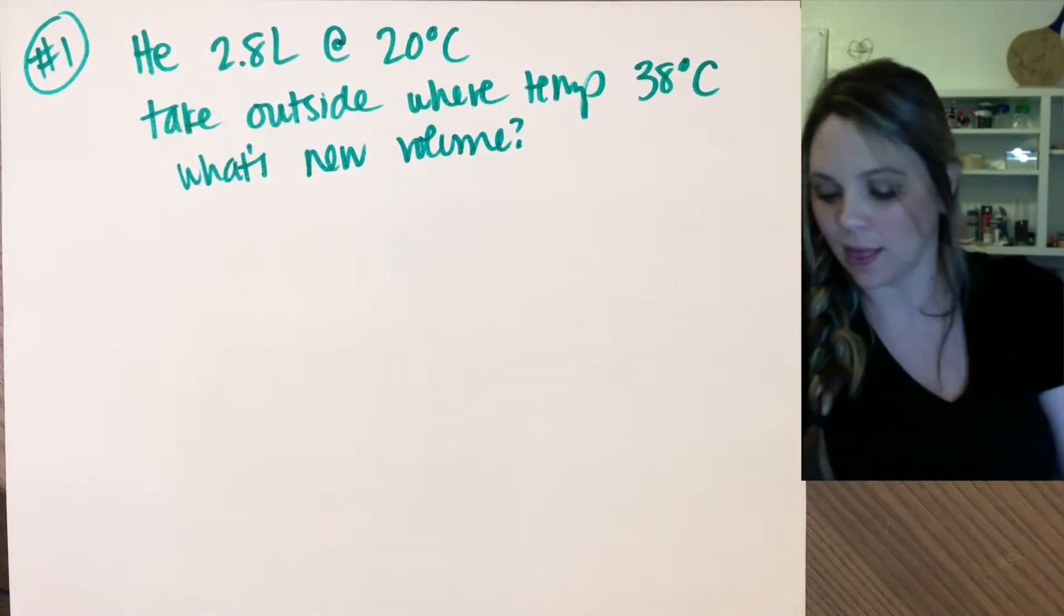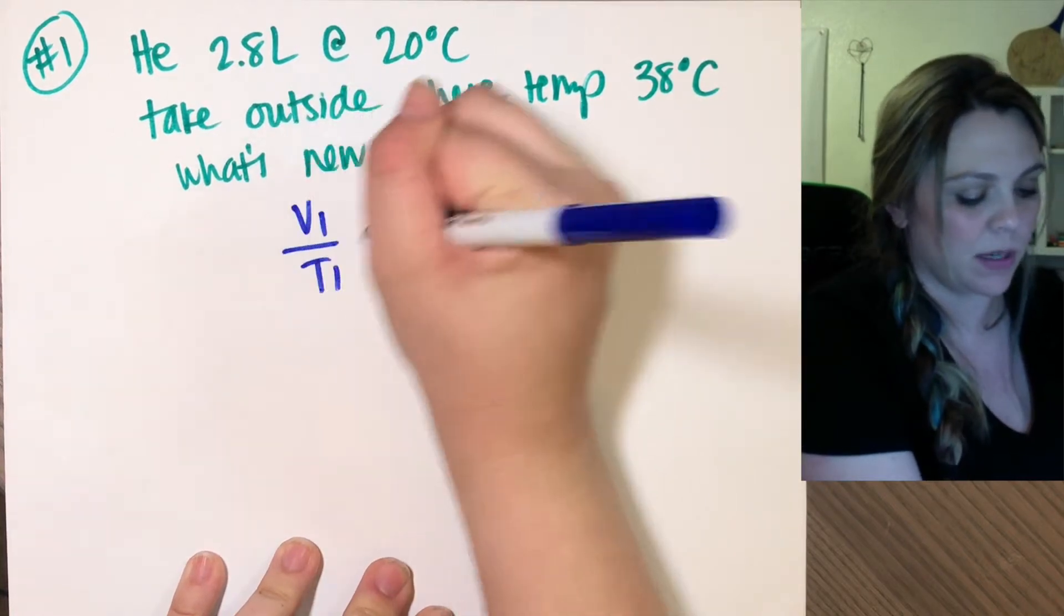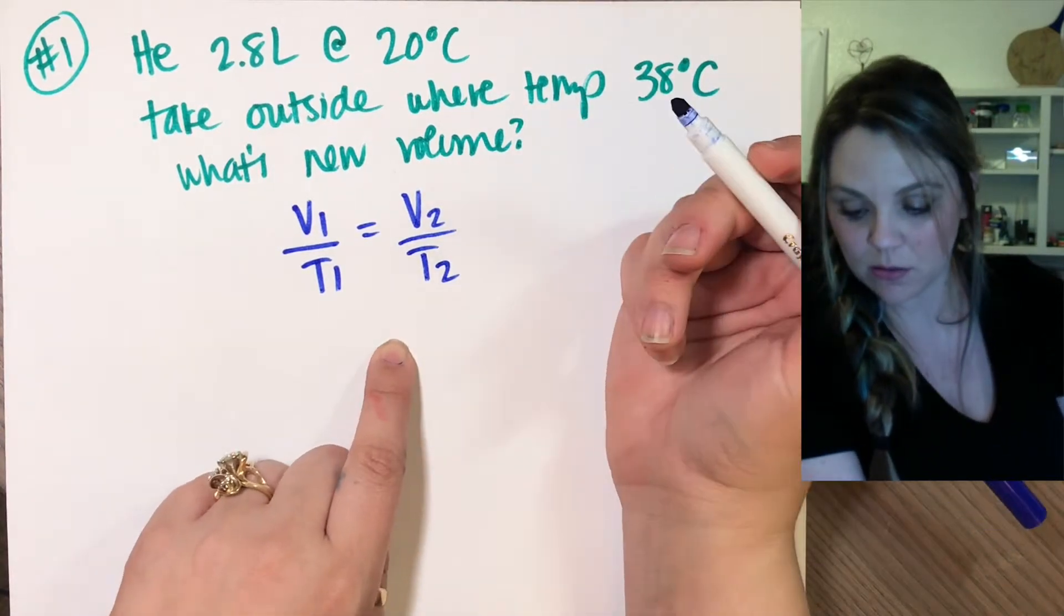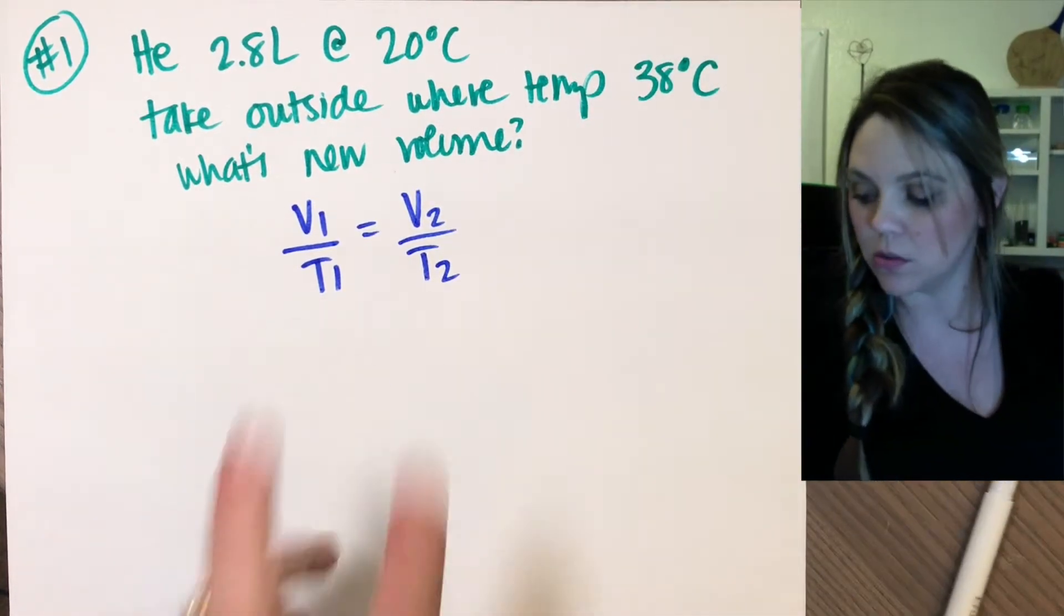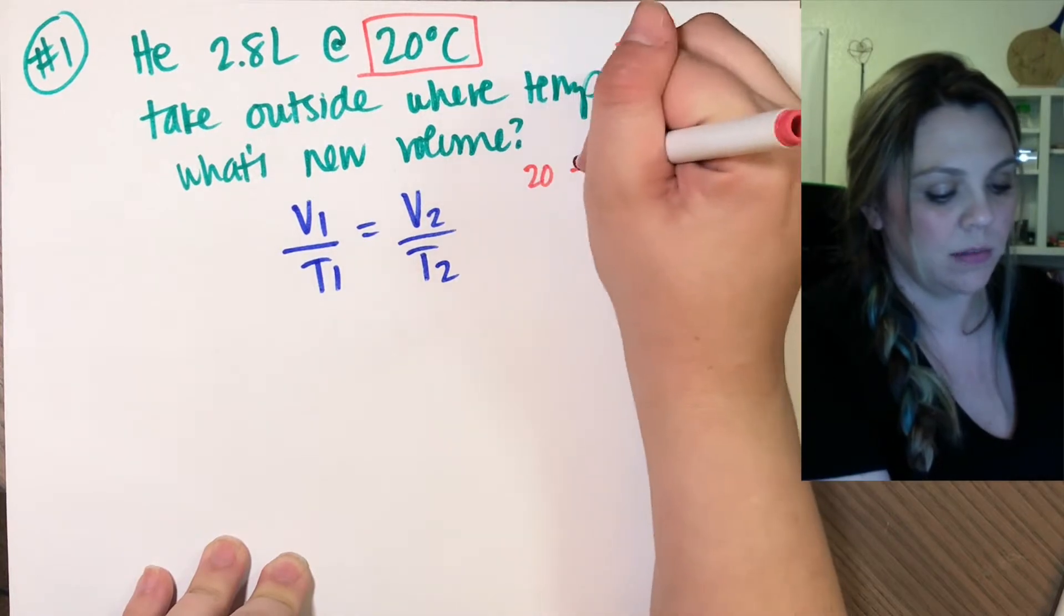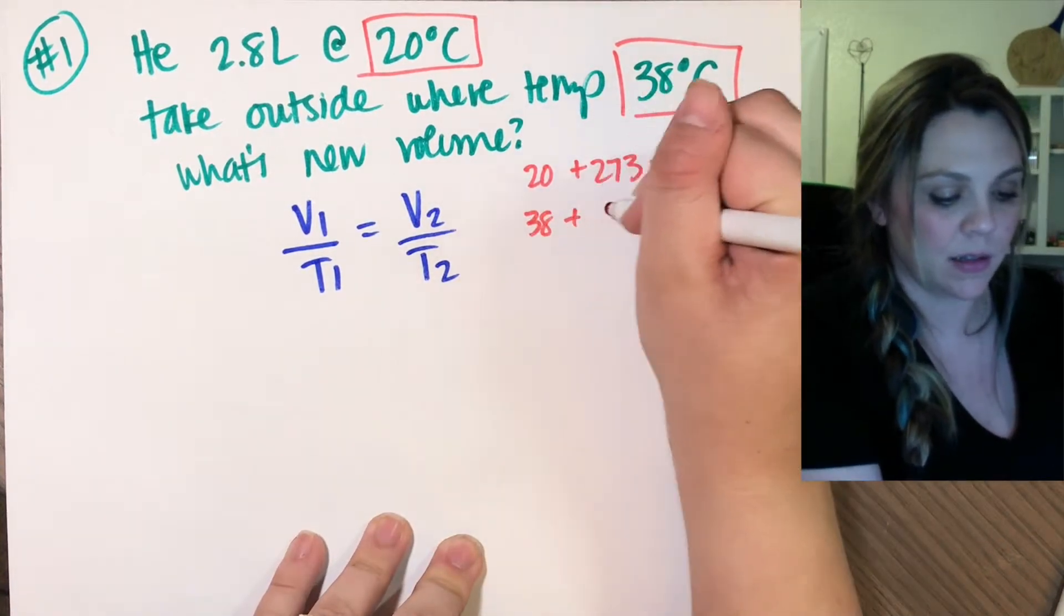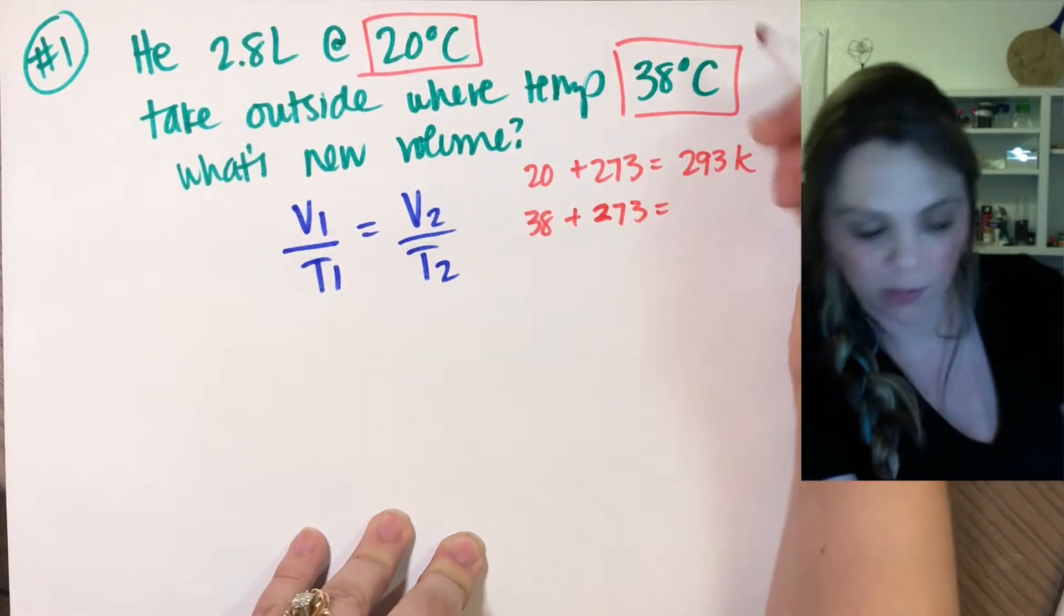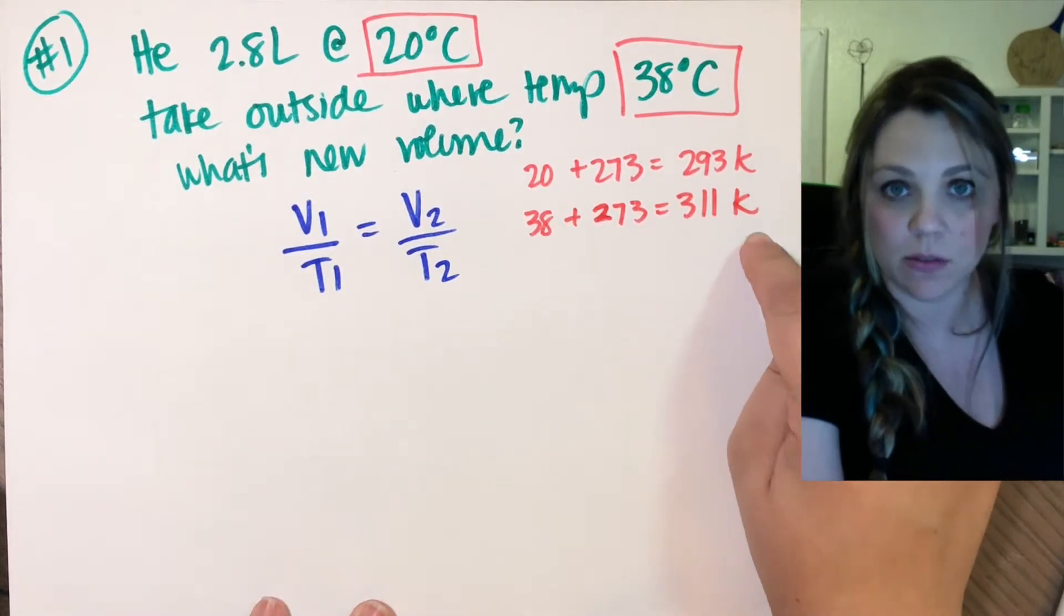This is V1 over T1 equals V2 over T2, and we plug this stuff in. Except you absolutely have to have this in kelvin, so don't solve for anything yet - you have to convert these to kelvin. So I take 20 plus 273 is 293 kelvin, and I take 38 plus 273 is 311 kelvin. I use these numbers - I only use my temperatures in kelvin.